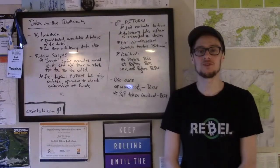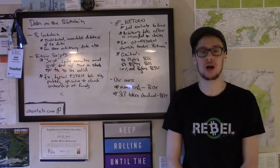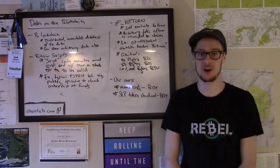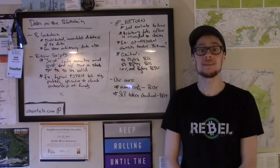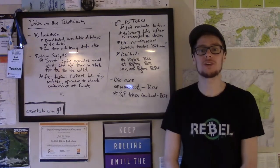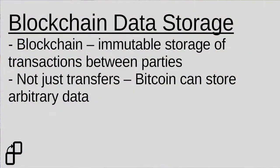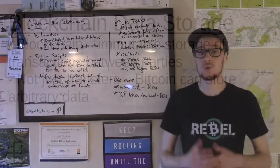Hey everyone, this is Josh with another Bitcoin and blockchain tutorial available at chaintuts.com. Today we're going to be talking about the interesting concept of adding arbitrary data to the Bitcoin blockchain. You may know that transactions between parties are recorded on this database called the blockchain when you send money from one person to another, but it turns out you're actually able to add some other data to that chain too.